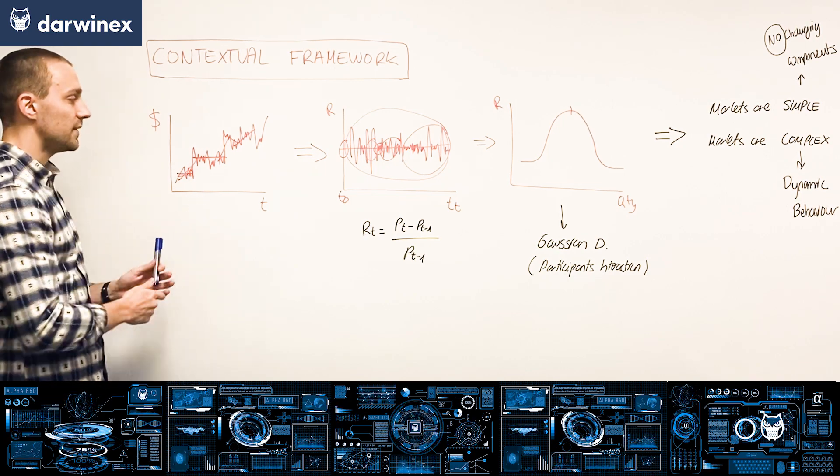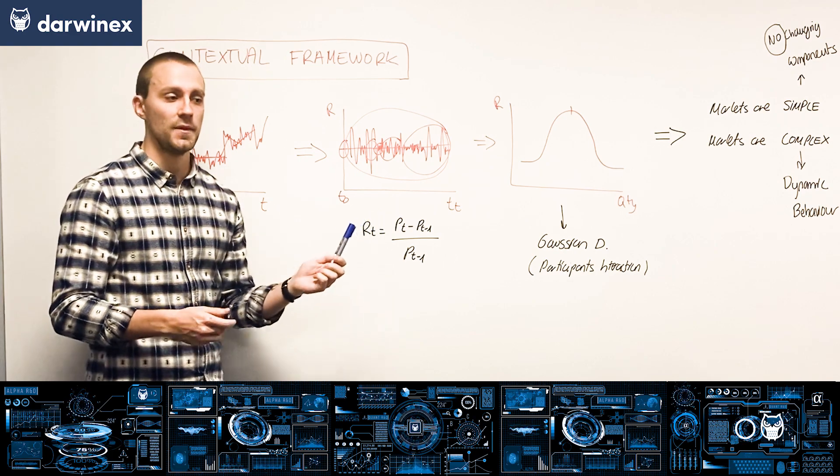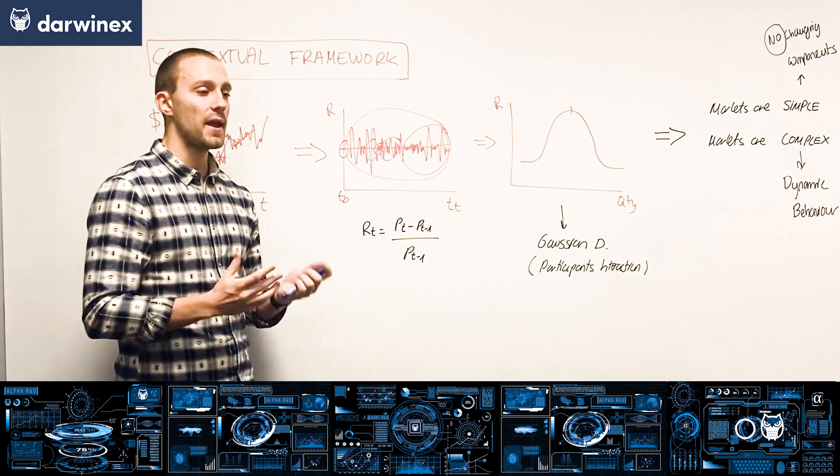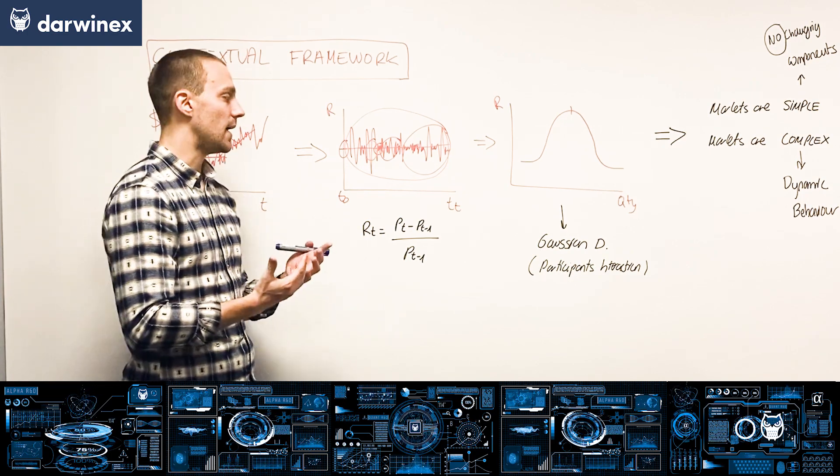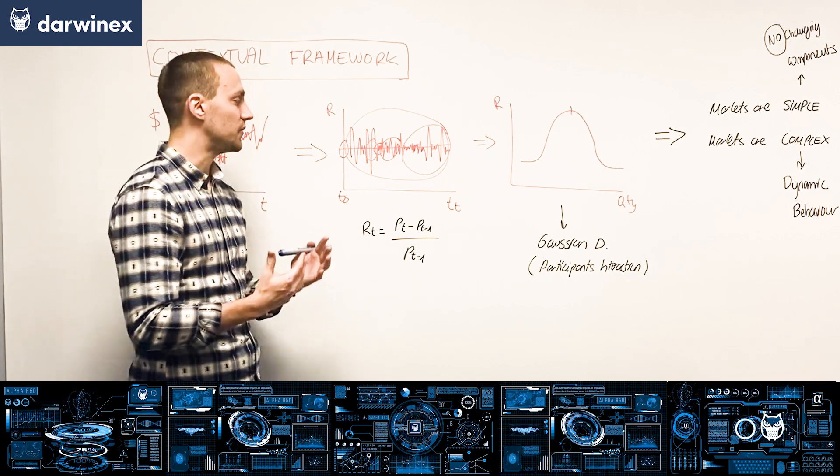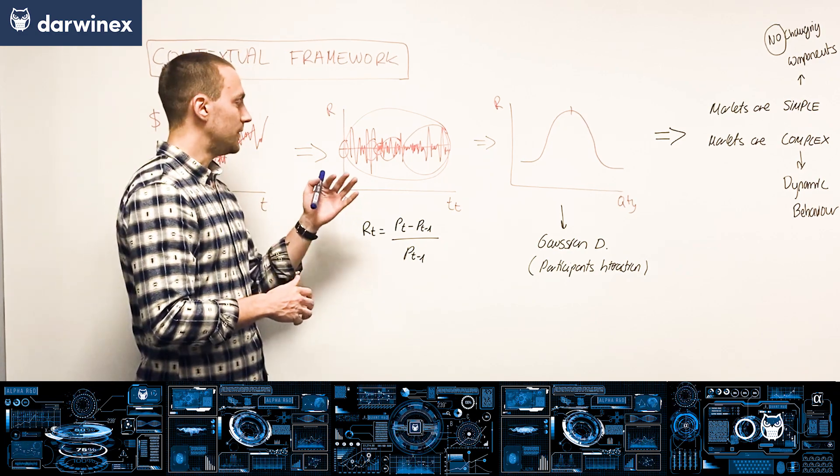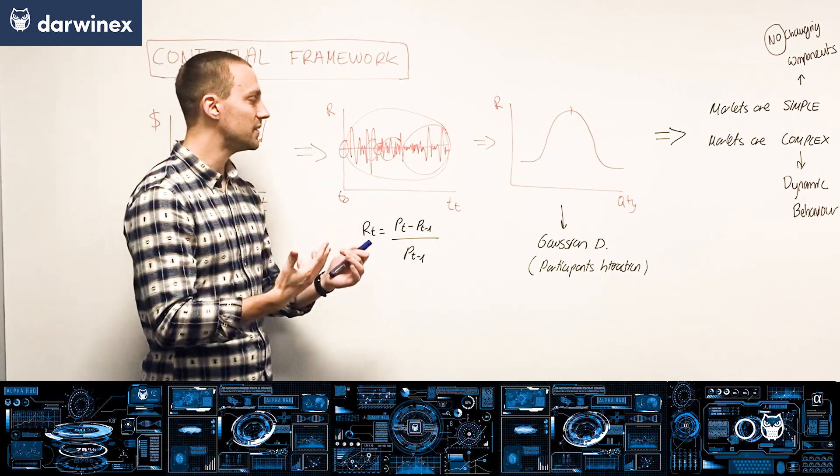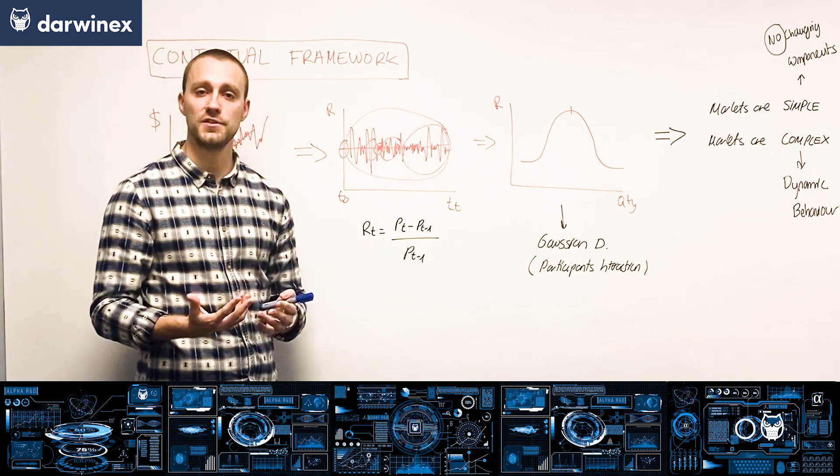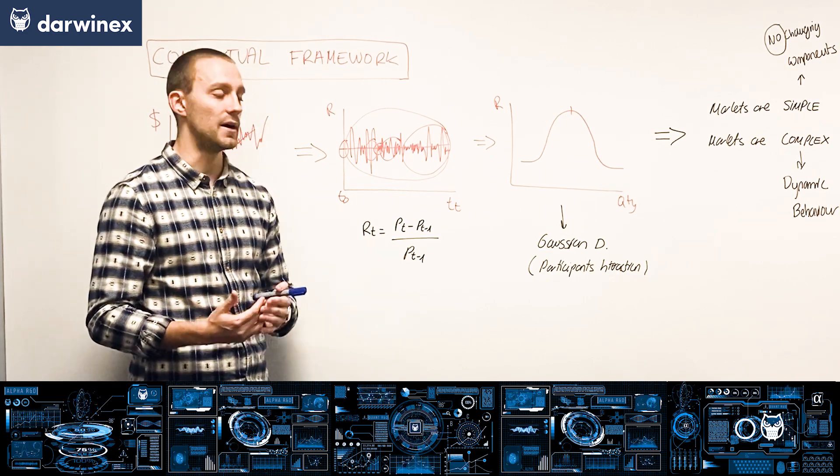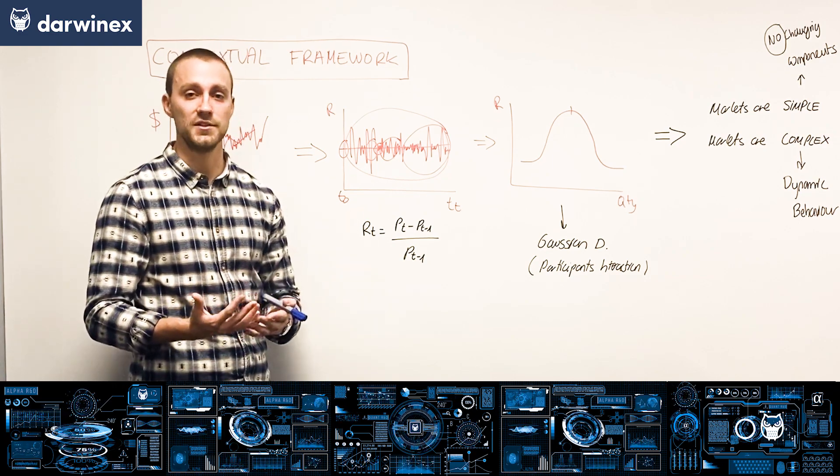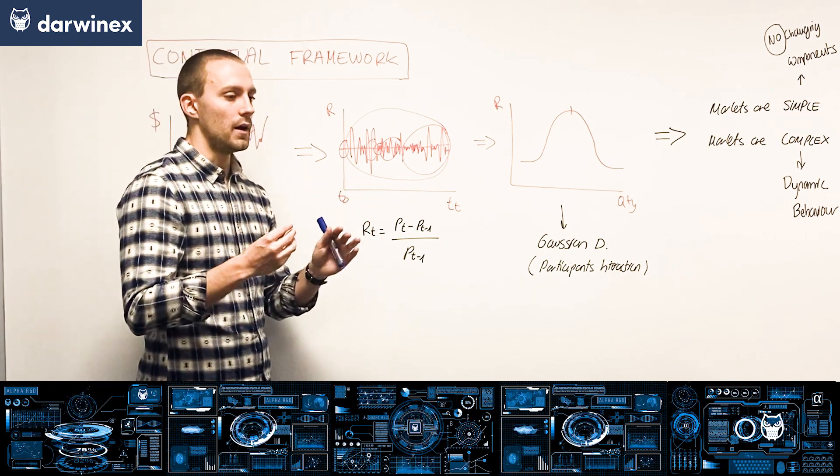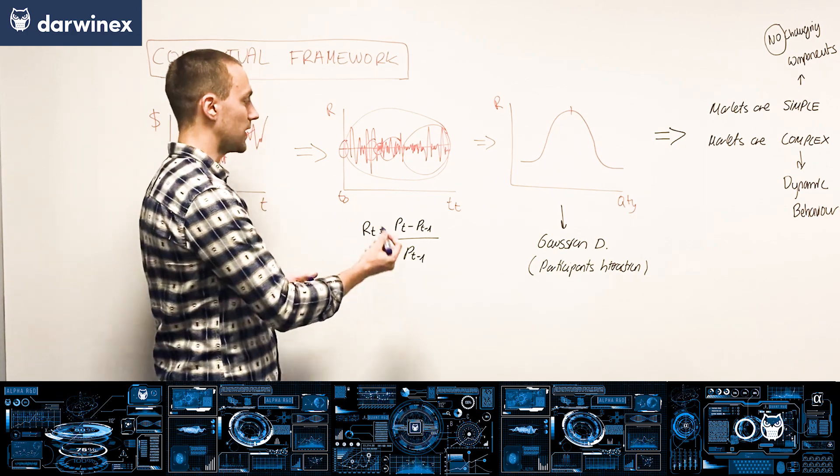Just starting from first principles, we have here a price series that we have converted onto a return series. It's really transparent to just look at this graph and see how, depending on the lookback period we actually use to create that distribution of returns, that lookback period will generate different distributions, implicitly confirming that hypothesis that markets are dynamic.